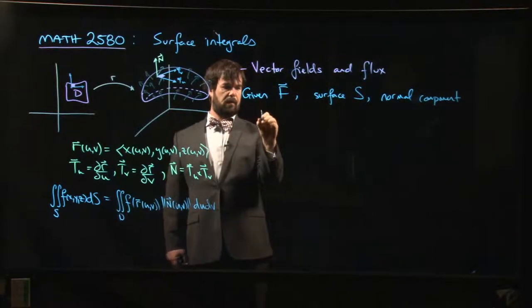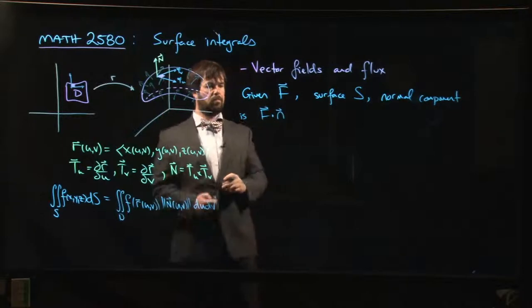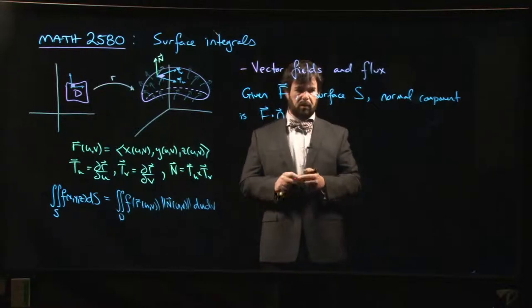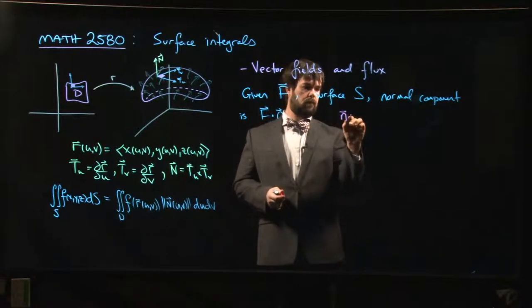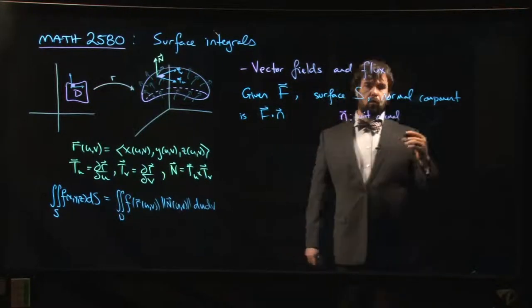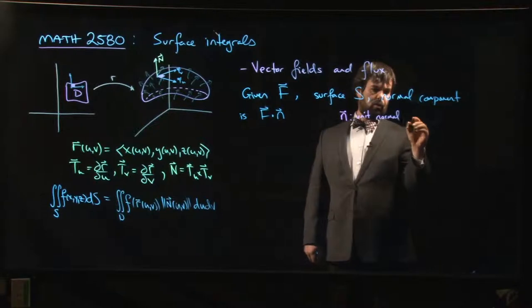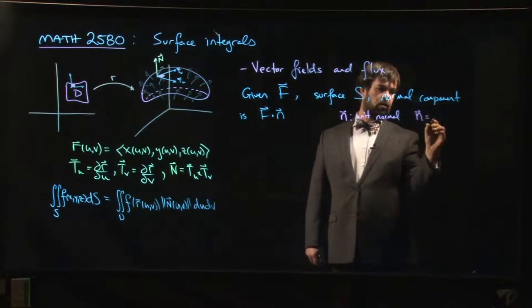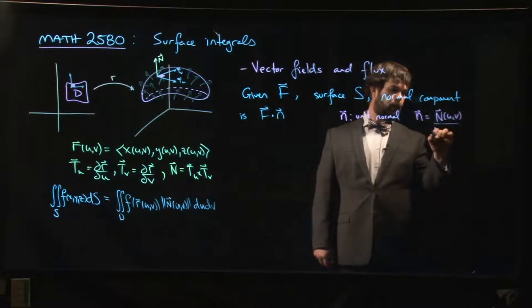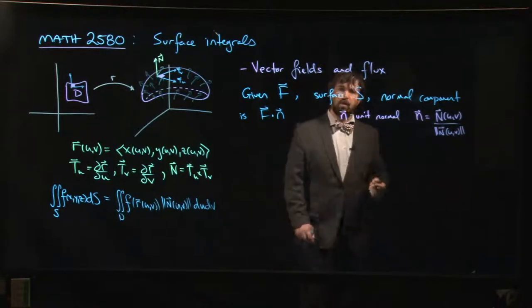In terms of a parameterization, n is going to be the big N that we've been working with all along divided by its magnitude. That's what little n is, giving you the unit normal.